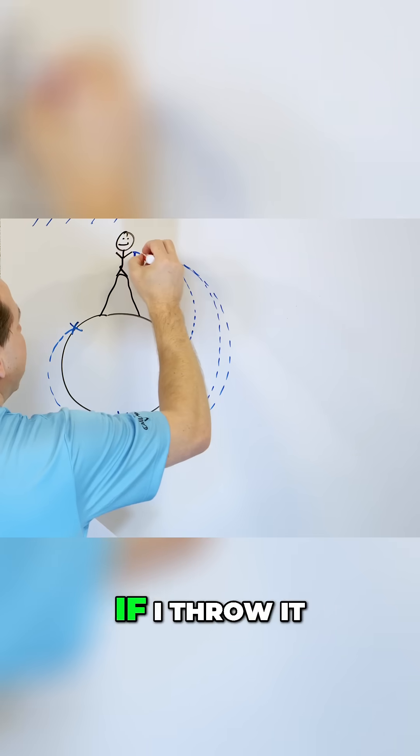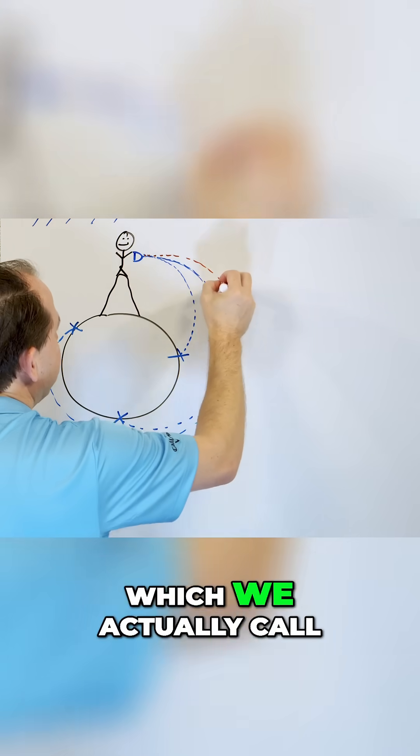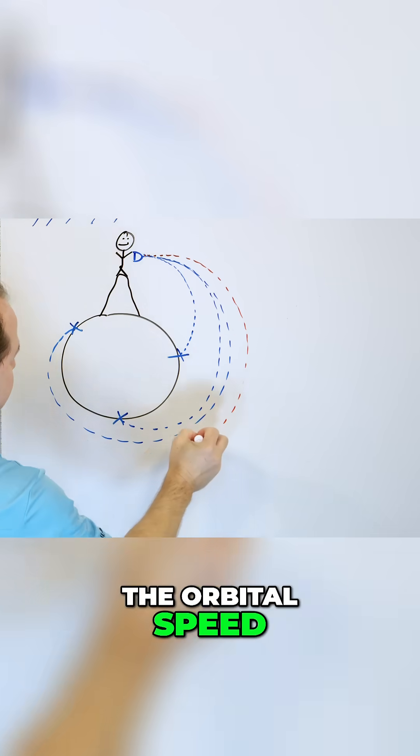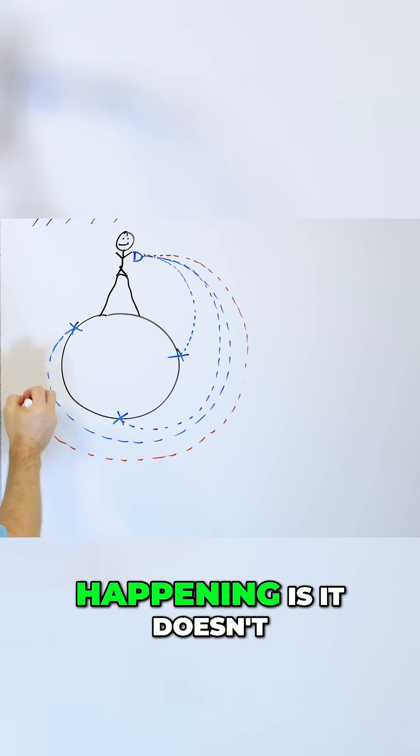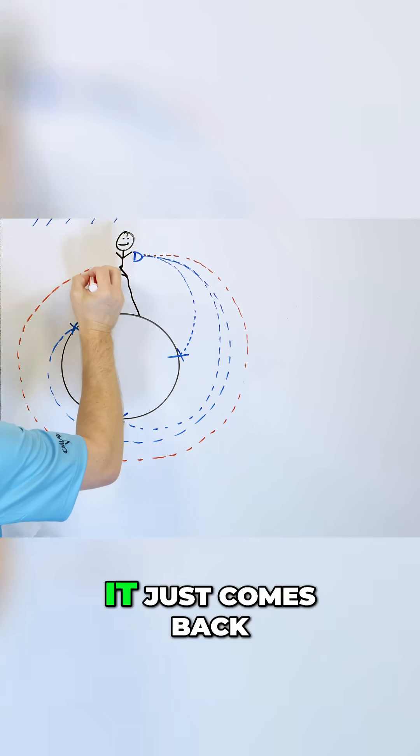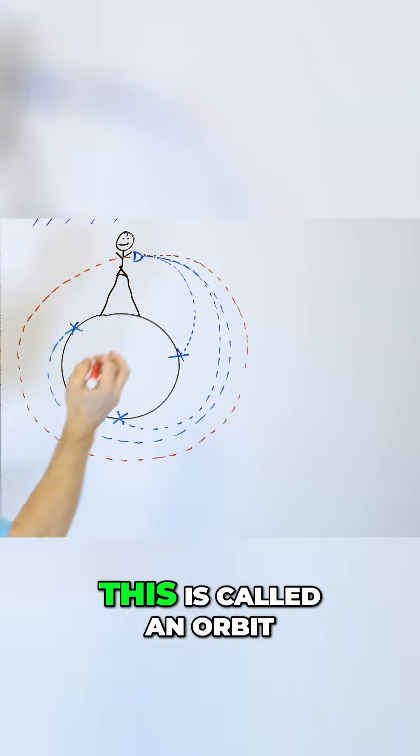Now let's change colors. If I throw it at the magical speed, which we actually call the orbital speed, then what ends up happening is it doesn't quite hit the ground. It just comes back to where it starts. This is called an orbit.